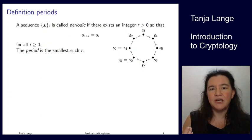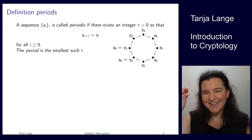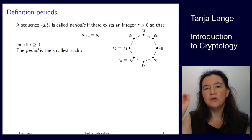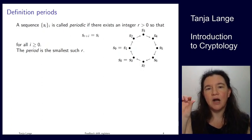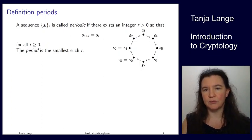In math notation, we have that s_i is the same as s_{r+i}. So that is the non-zero extra r, which you add to the i, and you get the same values in those positions. So the period is the smallest of those numbers.